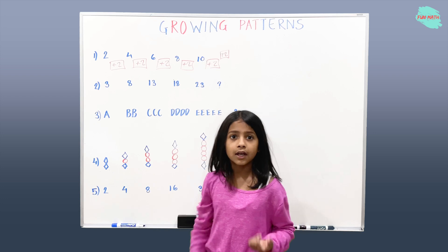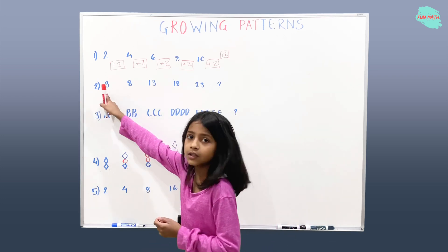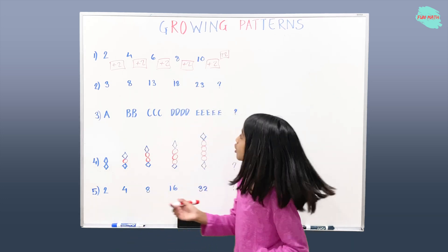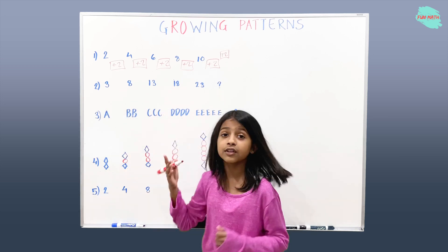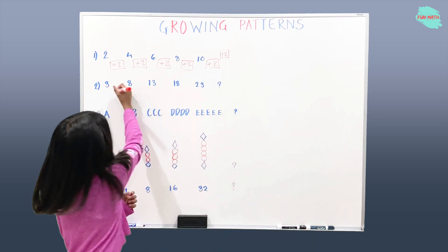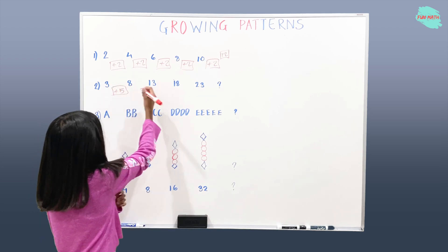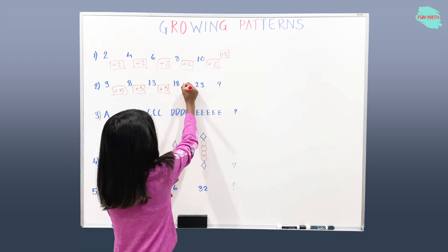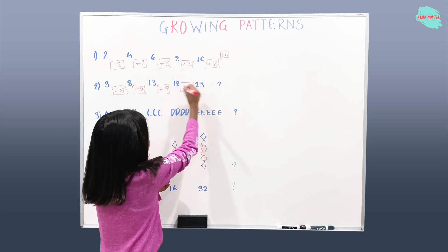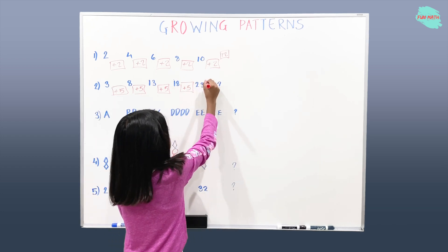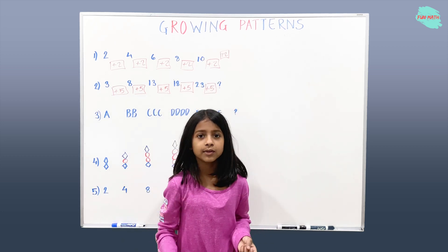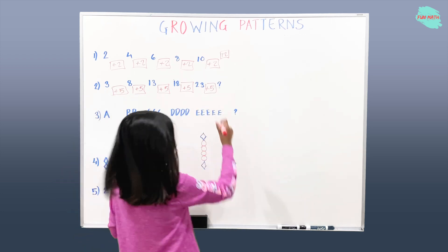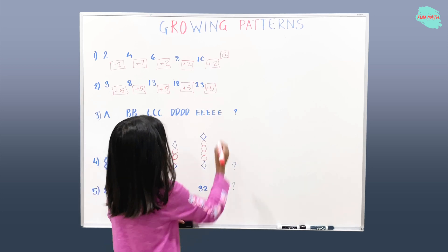Eighteen plus five equals twenty-three. And this is term one, term two, term three, term four, term five, and term six. We have to find out term six. So the rule is correct: plus five. Three plus five, then eight plus five, then thirteen plus five, then eighteen plus five, then twenty-three plus five. Twenty-three plus five is twenty-eight. That means term six is twenty-eight.